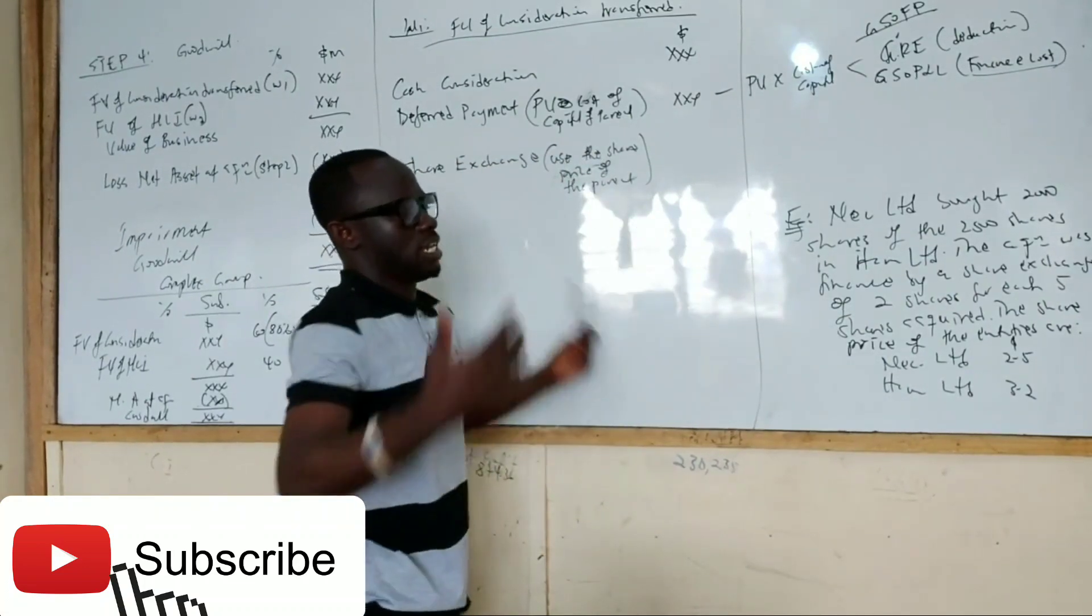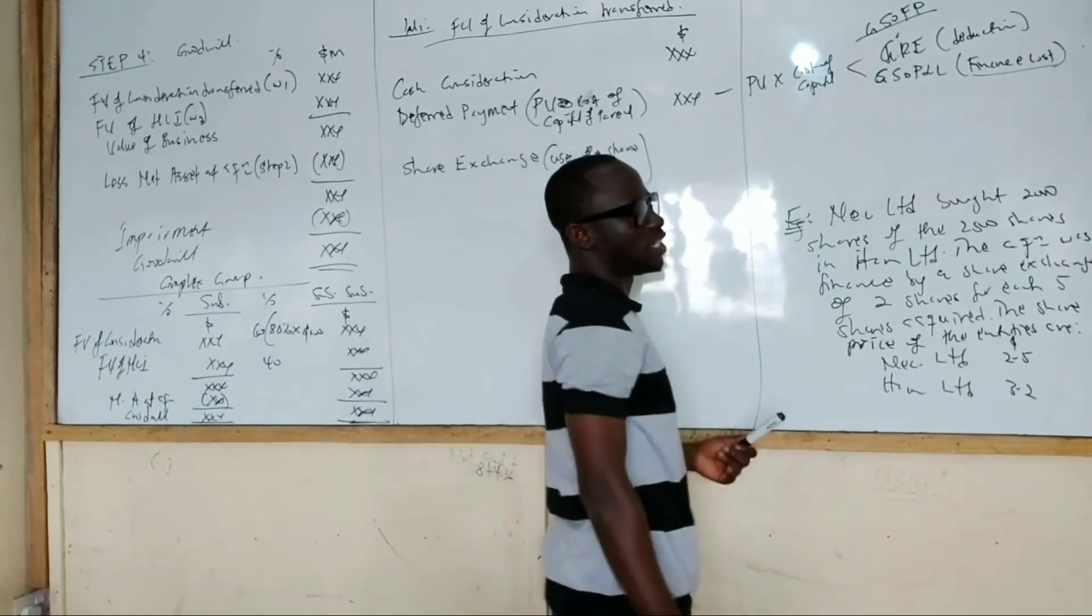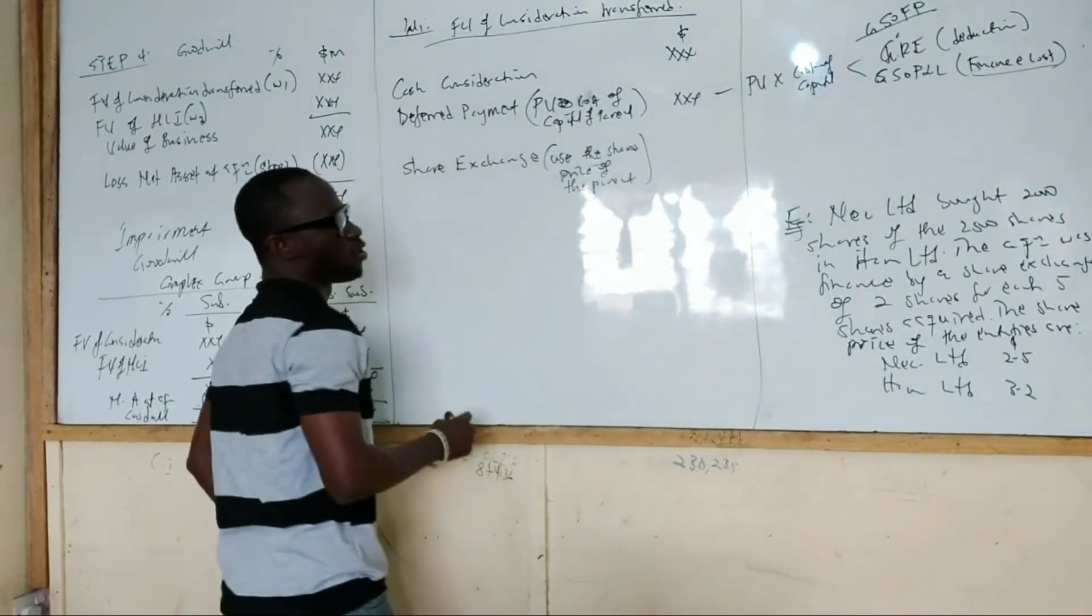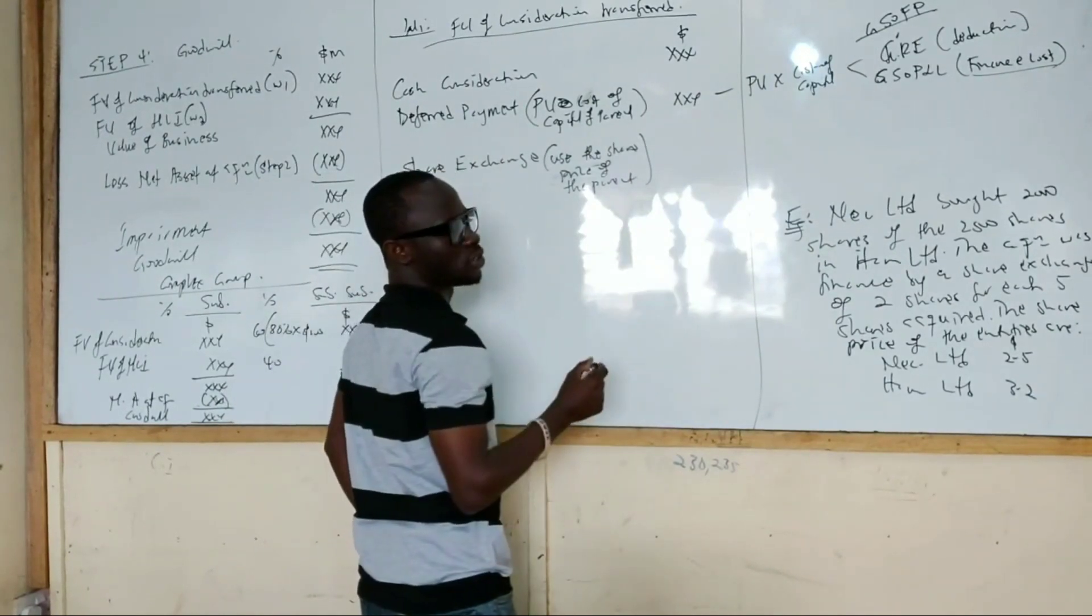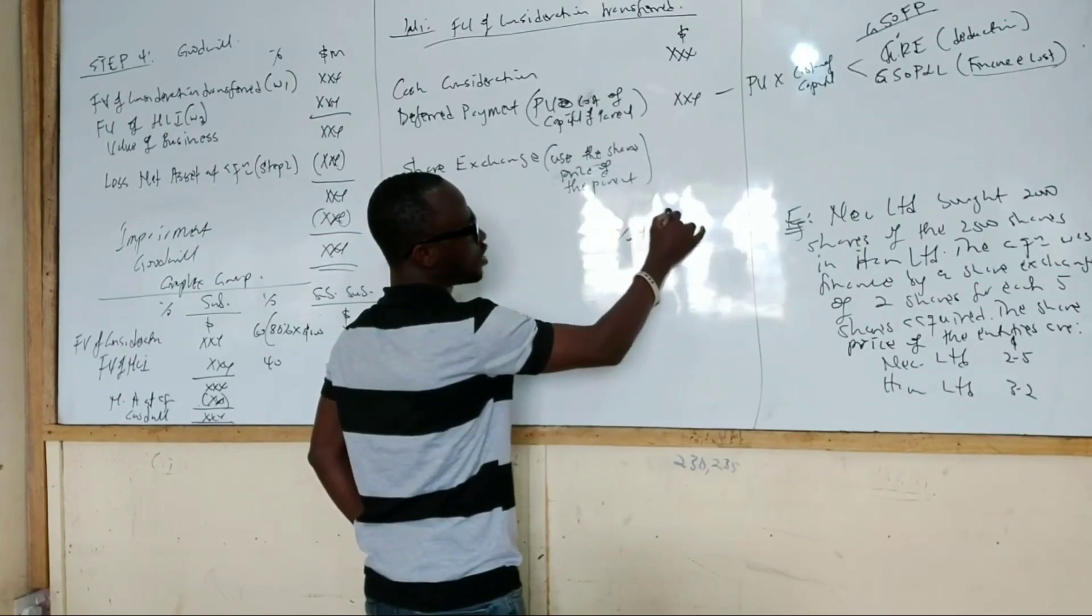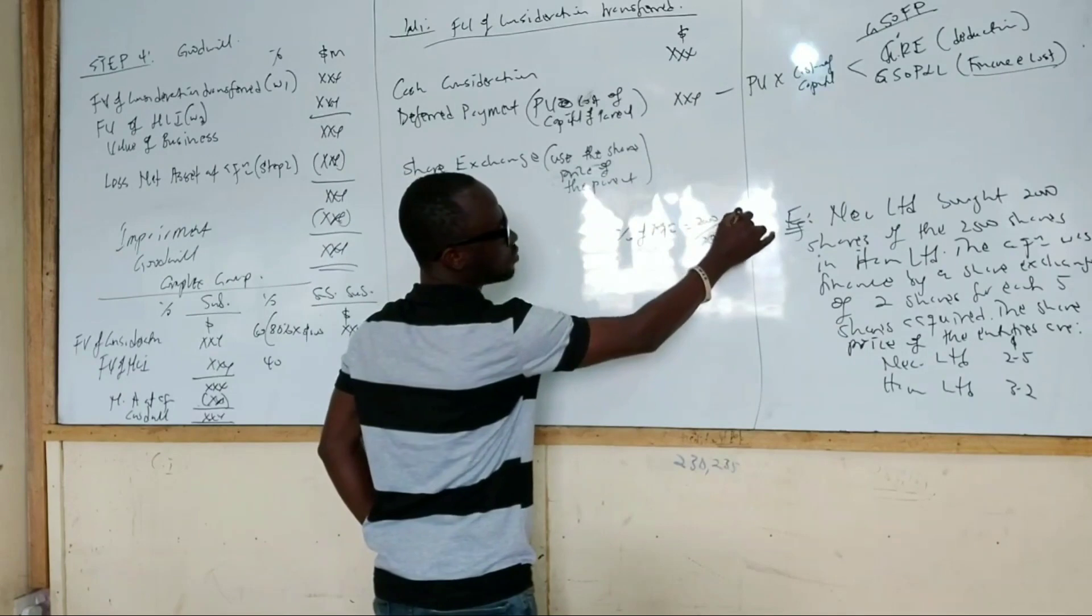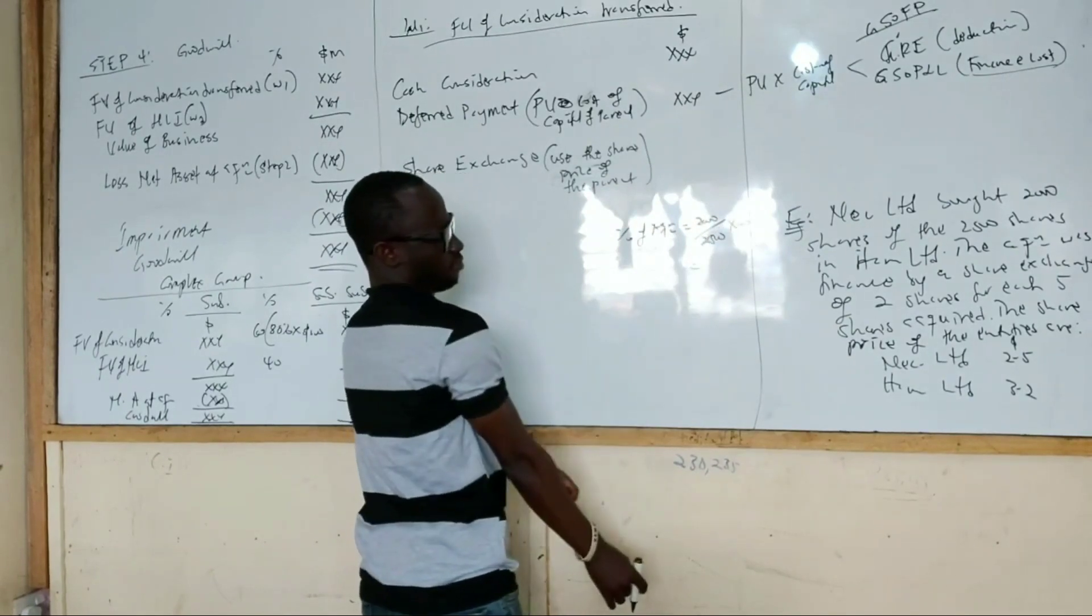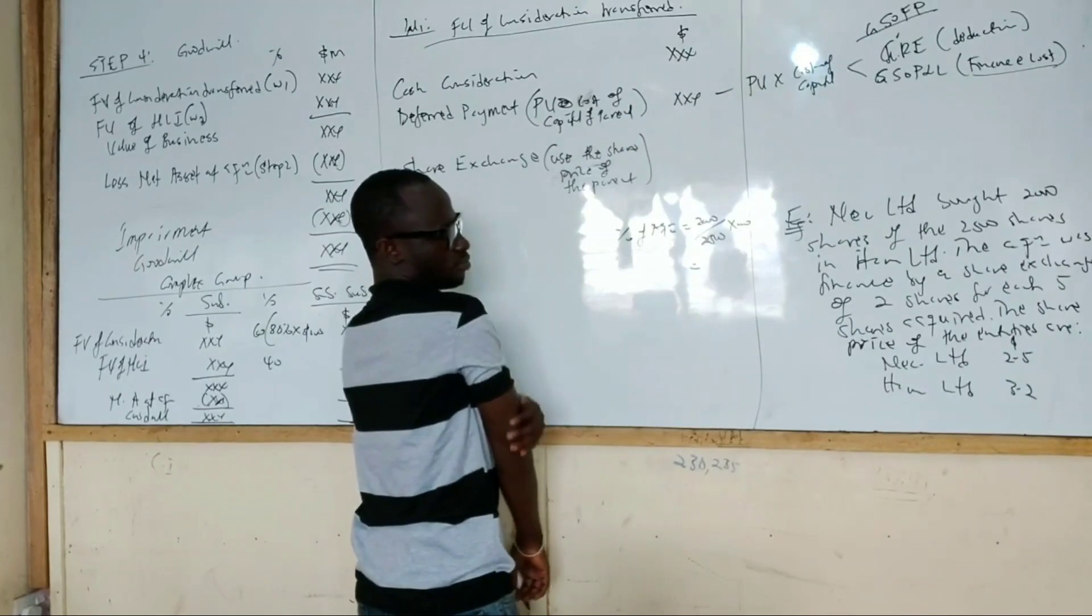So if you check, number one, you can decide to do a group structure. Here, you are not giving the percentage of ownership. So how do you get a group structure? They acquired 2,000. The total share is 2,500. So percentage of acquisition will be 2,000 over 2,500 times 100. That should be like 80%.